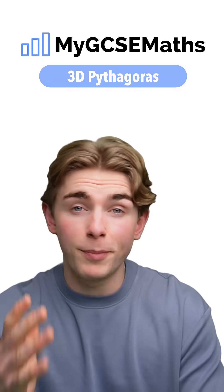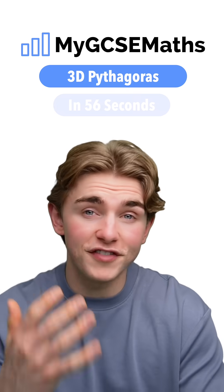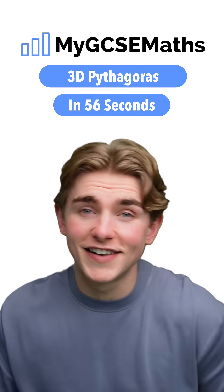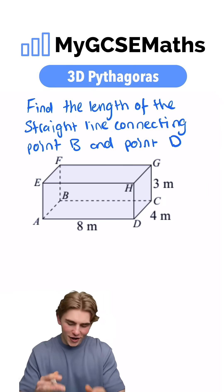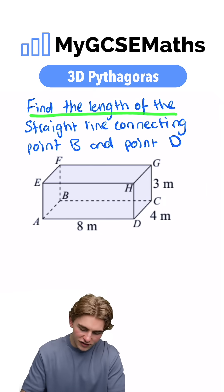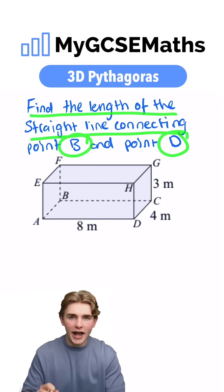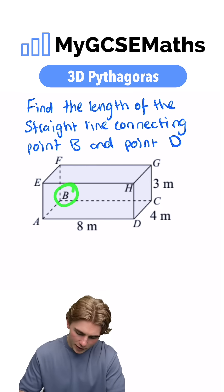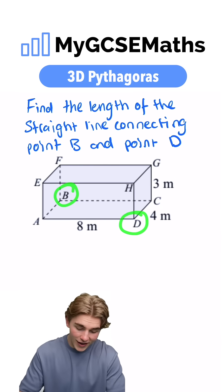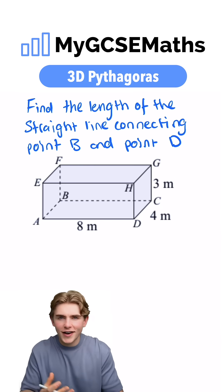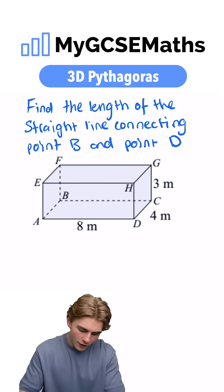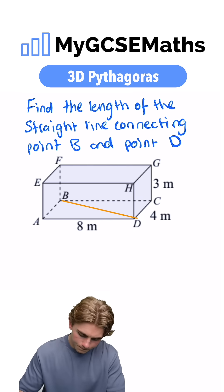GCSE Maths 3D Pythagoras. It says find the length of the straight line connecting point B and point D. Point B is over here and point D is down here. We can see that there's not currently a line connecting them, so we're going to draw one on.